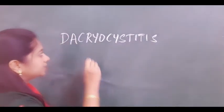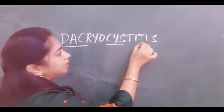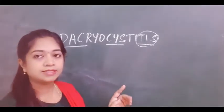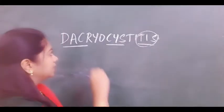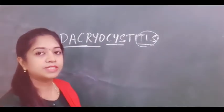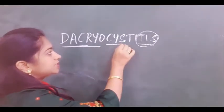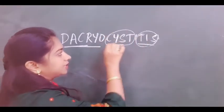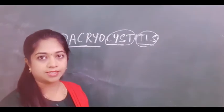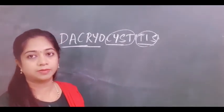Let's dissect this word: dacrio, cyst, and itis. Itis, as all of you know, is the inflammation. Dacrio means anything related to tears. Cyst is the sac. So, the tear sac inflammation is dacryocystitis — that is the inflammation of the lacrimal sac.